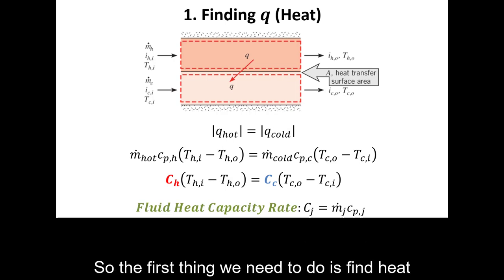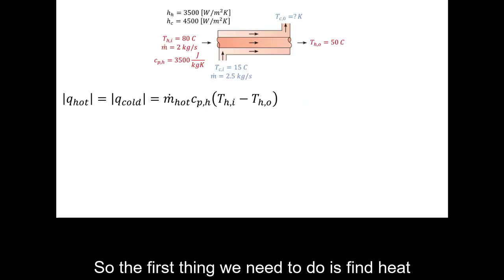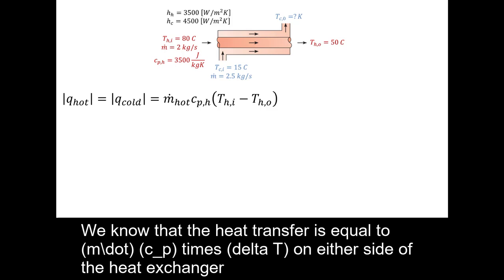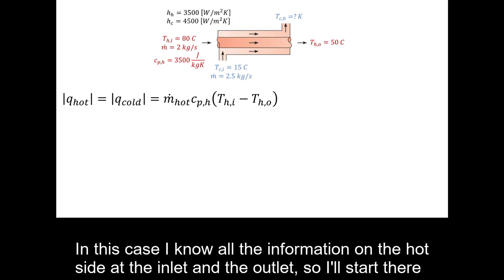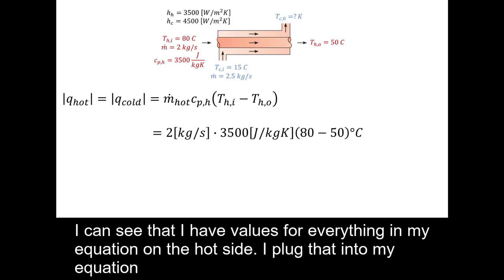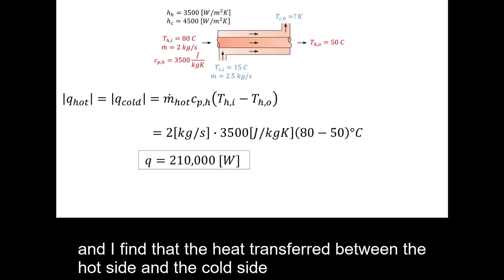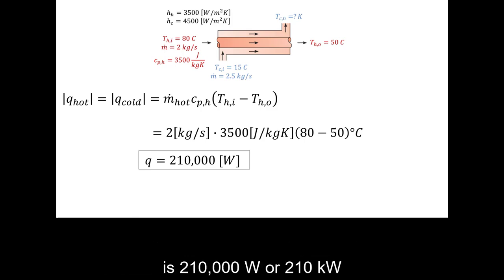So the first thing we need to do is find heat. We know that the heat transfer is equal to m-dot times Cp times delta T on either side of the heat exchanger. In this case I know all the information on the hot side at the inlet and the outlet, so I'll start there. I can see that I have values for everything in my equation on the hot side, and I find that the heat transferred between the hot side and the cold side is 210,000 watts, or 210 kilowatts.